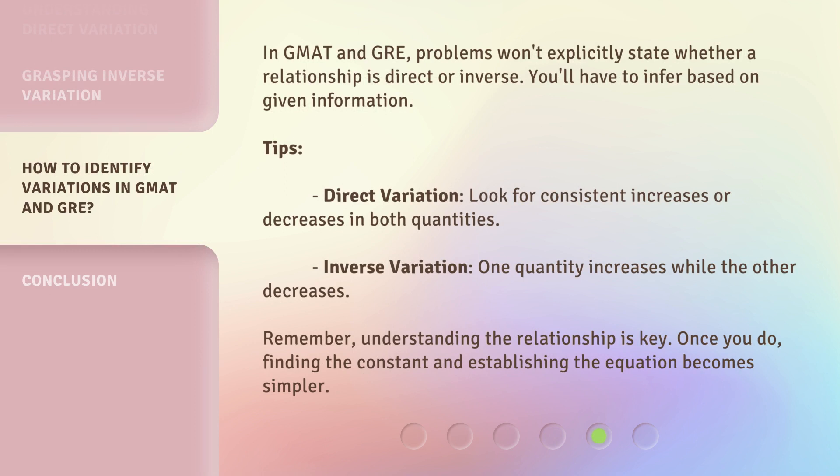In GMAT and GRE, problems won't explicitly state whether a relationship is direct or inverse. You'll have to infer based on given information. For direct variation, look for consistent increases or decreases in both quantities. For inverse variation, one quantity increases while the other decreases. Remember, understanding the relationship is key. Once you do, finding the constant and establishing the equation becomes simpler.